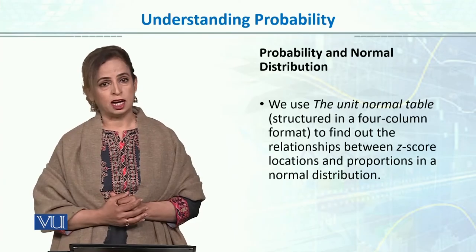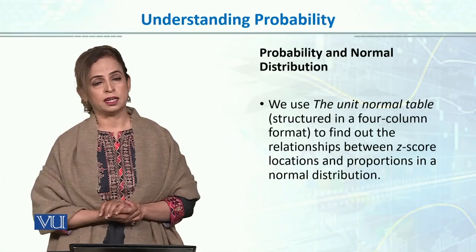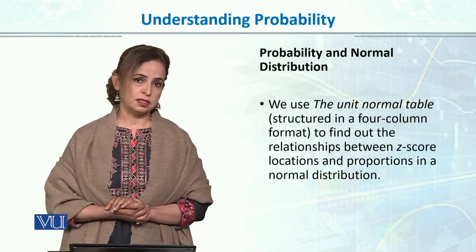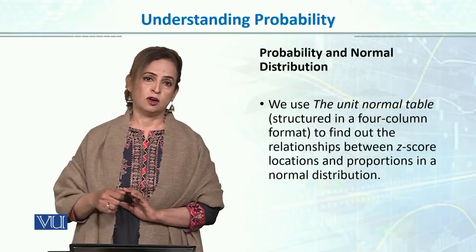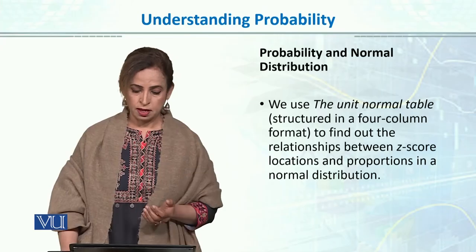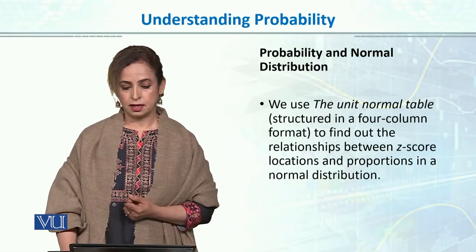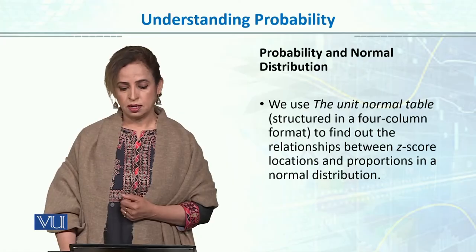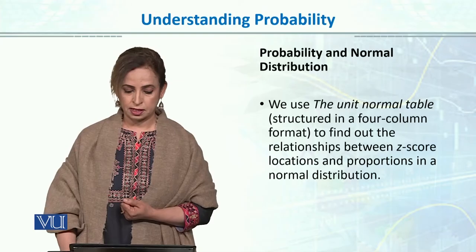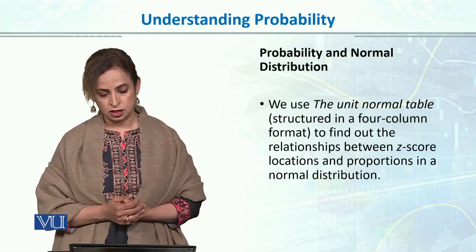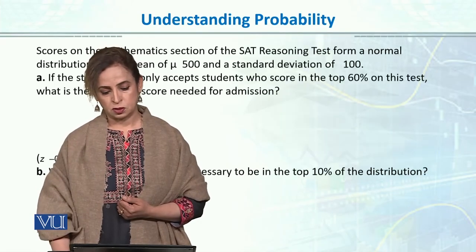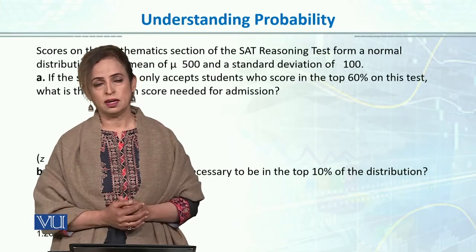We use the unit normal table. I will show you in a couple of minutes what the table is. You should know your book, and we will explain the relationship between Z score, location, and proportions in a normal distribution from the table.